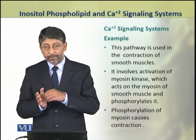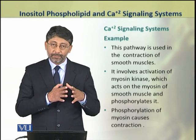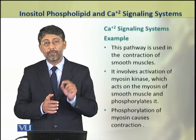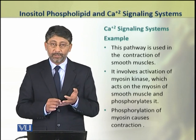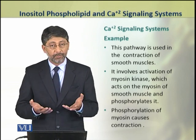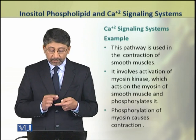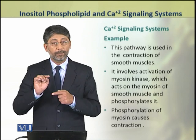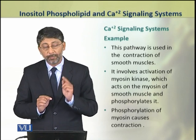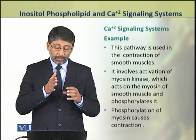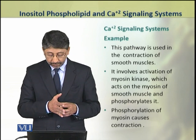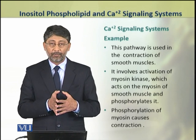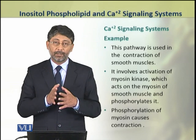As an example of the calcium signaling system, consider smooth muscle contraction. In smooth muscles, this signaling system involves activation of myosin kinase enzyme, which phosphorylates the protein myosin. When myosin is phosphorylated in smooth muscles, the smooth muscles contract. This is how the calcium signaling pathway causes smooth muscle contraction.